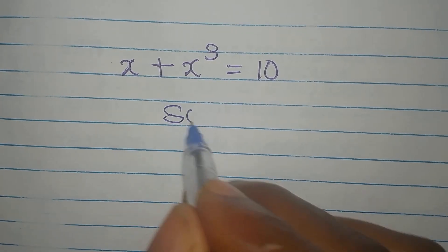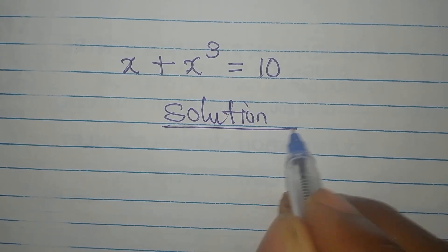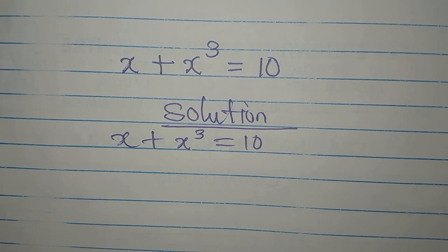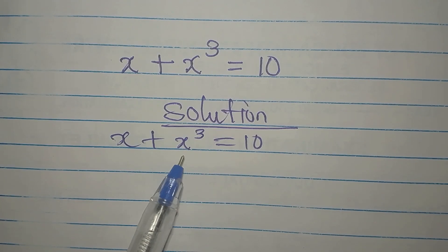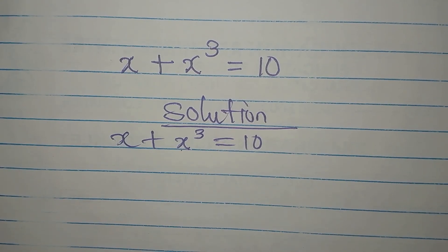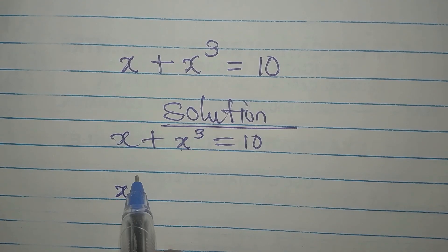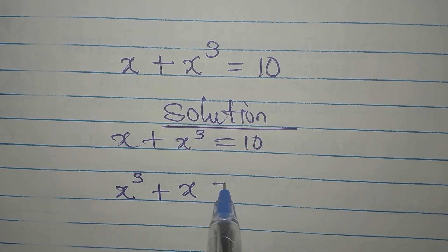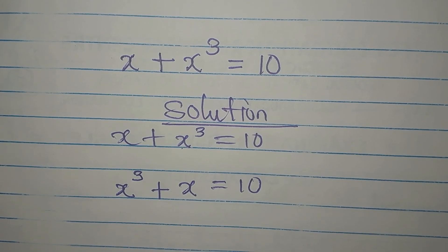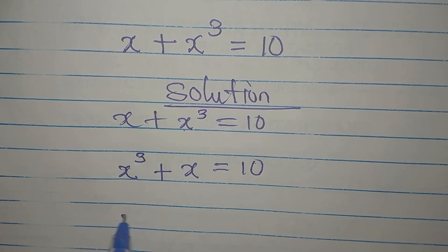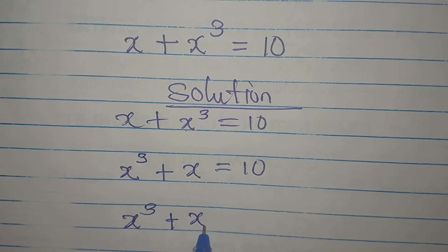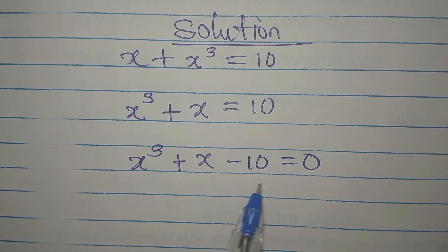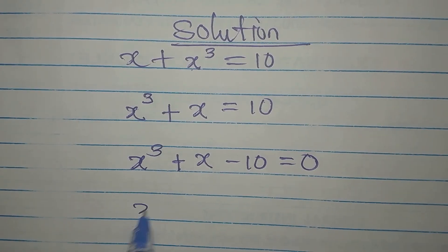Let's provide the solution to this. Normally the term with the highest power should appear first, so we have X to the power of 3 appearing first: X³ + X = 10. The next step is to bring everything to the left, giving us X³ + X - 10 = 0.